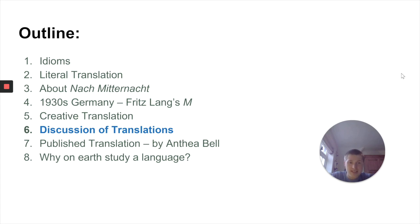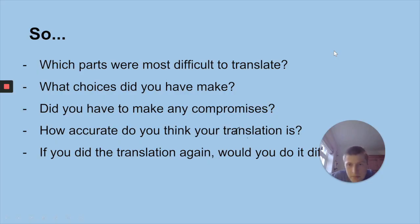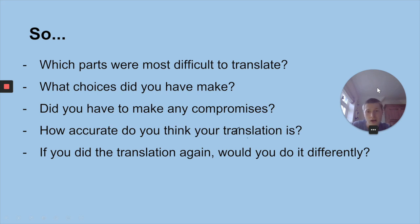Hopefully you enjoyed translating the text and you have in front of you now your creative translation of the German, which is now in idiomatic English — so that one would never know it was originally a German novel. Now we're going to have a think about what might have been some of the challenges and what you could have done differently. Some questions you might want to ask: what bits were tricky, what choices did you have to make, what compromises did you have to make, and whether your translations are accurate. Did you do things that decrease accuracy? And if you did it again, what would you do differently?